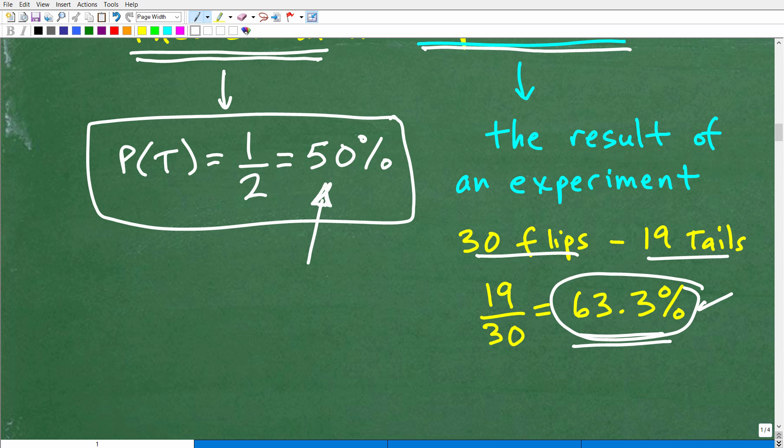Because we would expect that we only really have a one-half chance, right, 50% chance of it becoming tails.